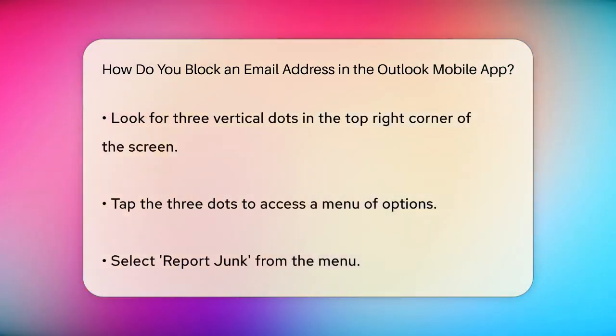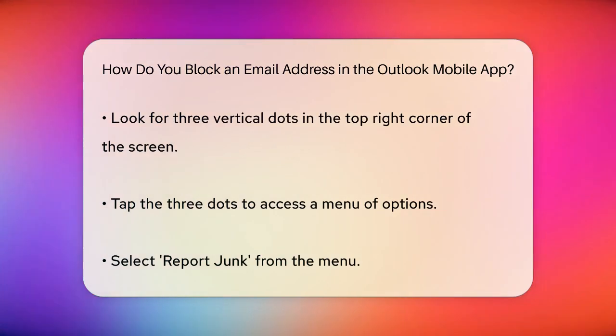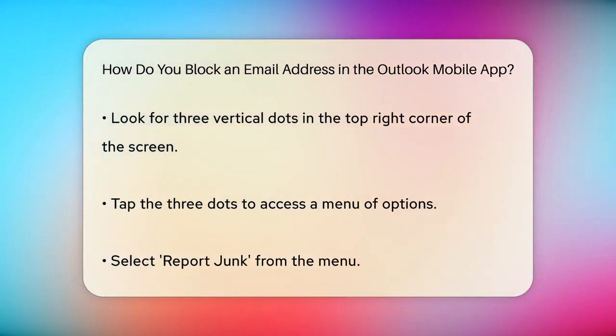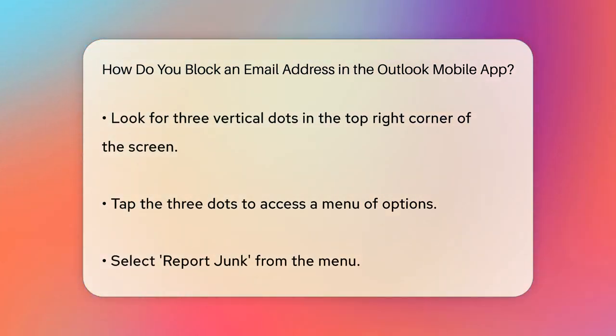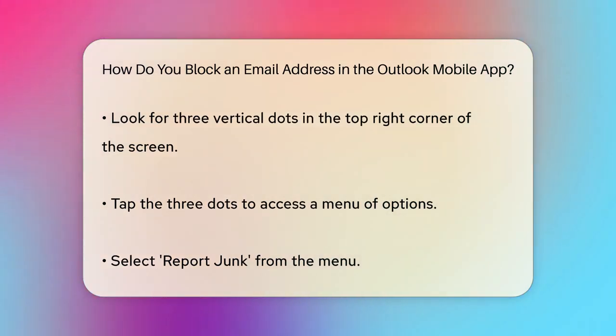Next, open the message from the sender you wish to restrict. In the top right corner of the screen, you'll see three vertical dots. Tap these dots to open a menu of options.